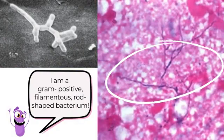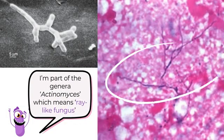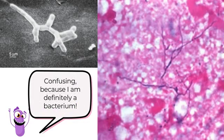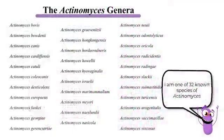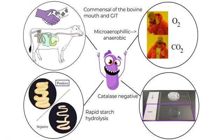I'm classified as a gram-positive filamentous rod-shaped bacterium. I'm part of the genera Actinomyces, which means 'ray-like fungus' — which is confusing, because I'm definitely a bacterium. I'm one of 32 known species of Actinomyces. I'm a commensal of the bovine oropharynx, microaerophilic to anaerobic, catalase negative, and I hydrolyse starch quickly.